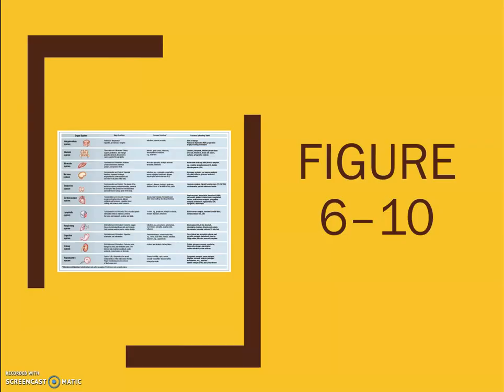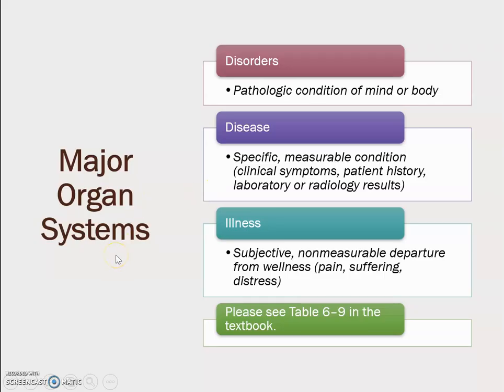Table 6-10 covers organ systems, their major functions, and common laboratory tests — please review that chart. Major organ systems have associated disorders, which are pathogenic conditions of the mind or body. Disease is a specific measurable condition identified through clinical symptoms, patient history, and laboratory or radiological results. Illness is a subjective, non-measurable departure from wellness involving pain, suffering, and distress. Please see table 6-9 in your textbook.